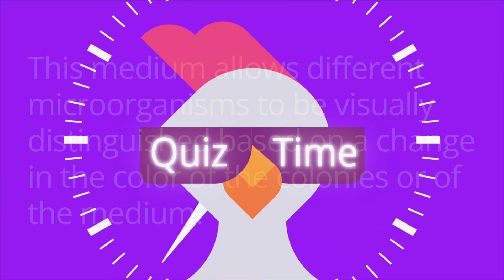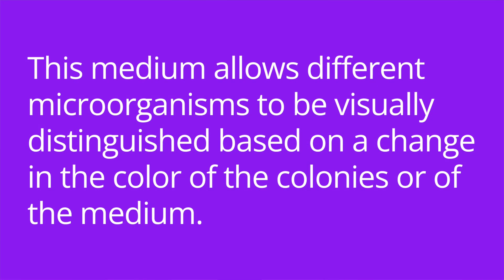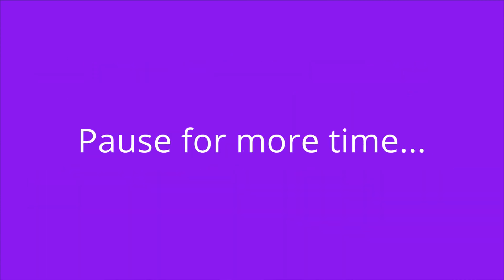It's quiz time — I have four questions for you. I'm going to provide a description and I want you to name that culture medium. Number one: this medium allows different microorganisms to be visually distinguished based on a change in the color of the colonies or of the medium. The answer is a differential medium.